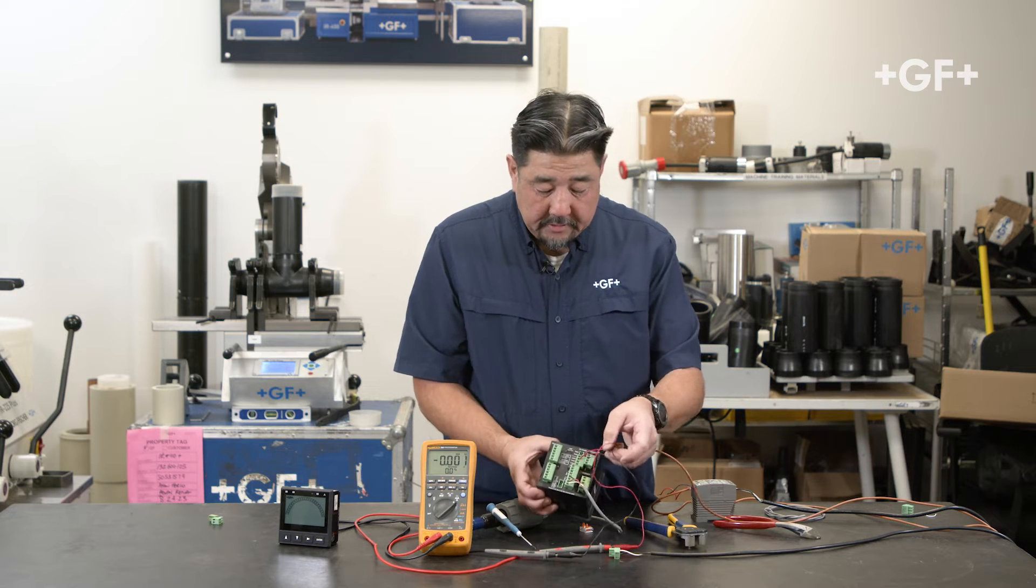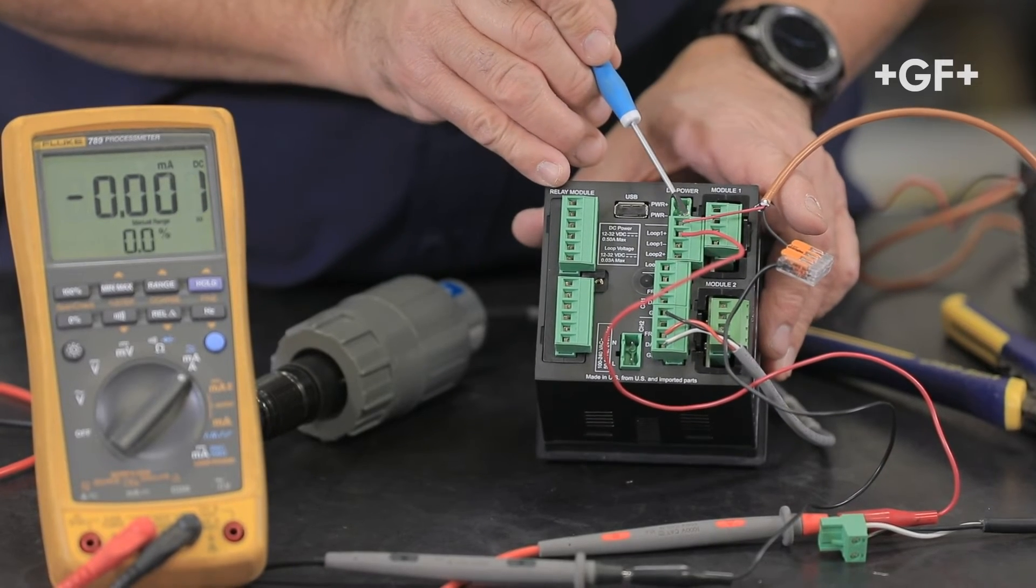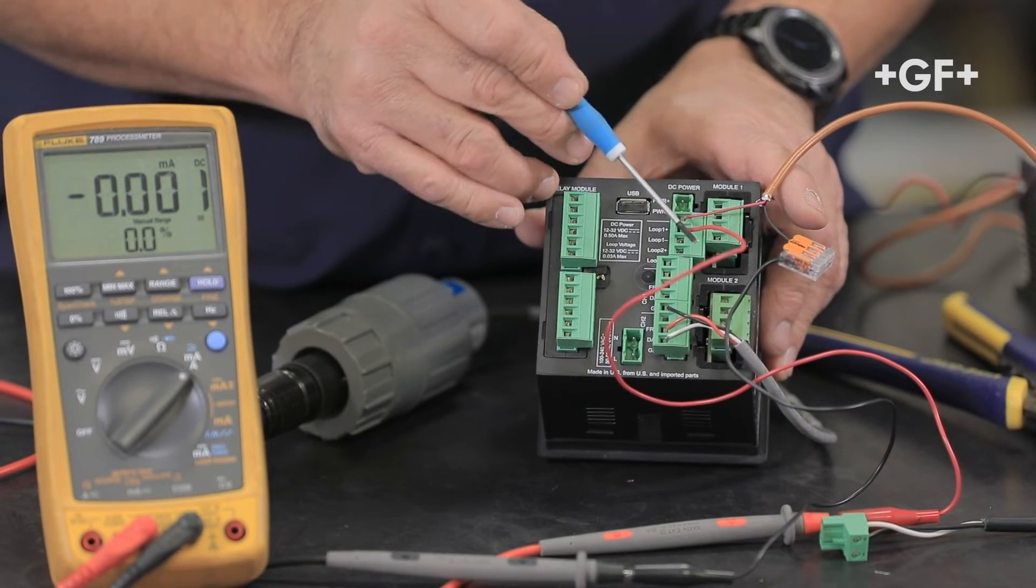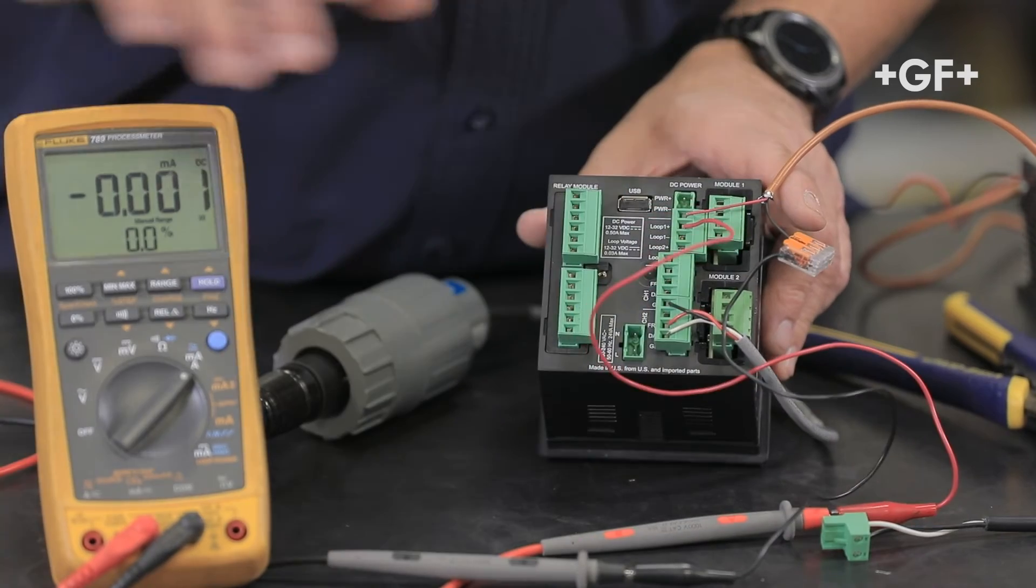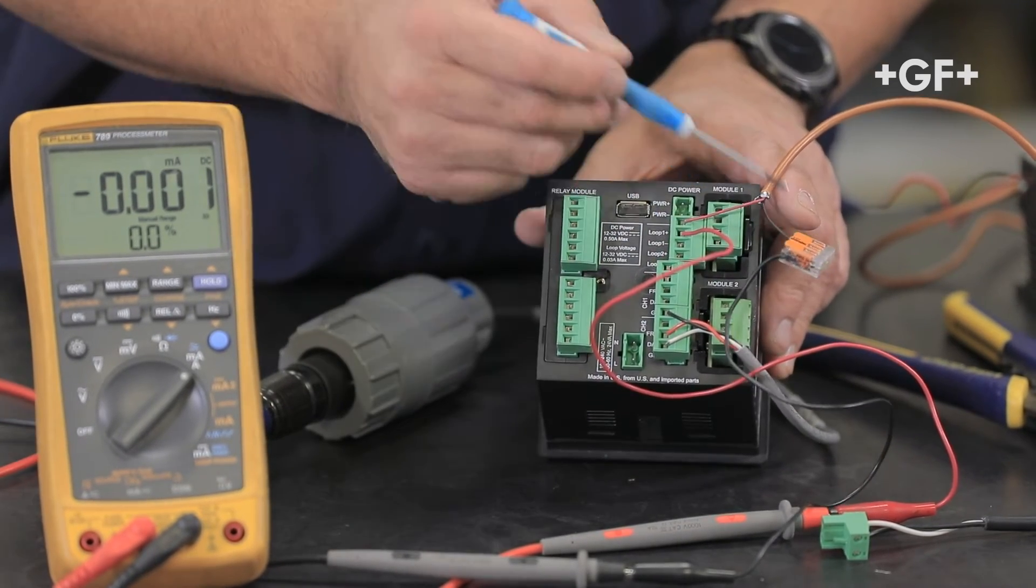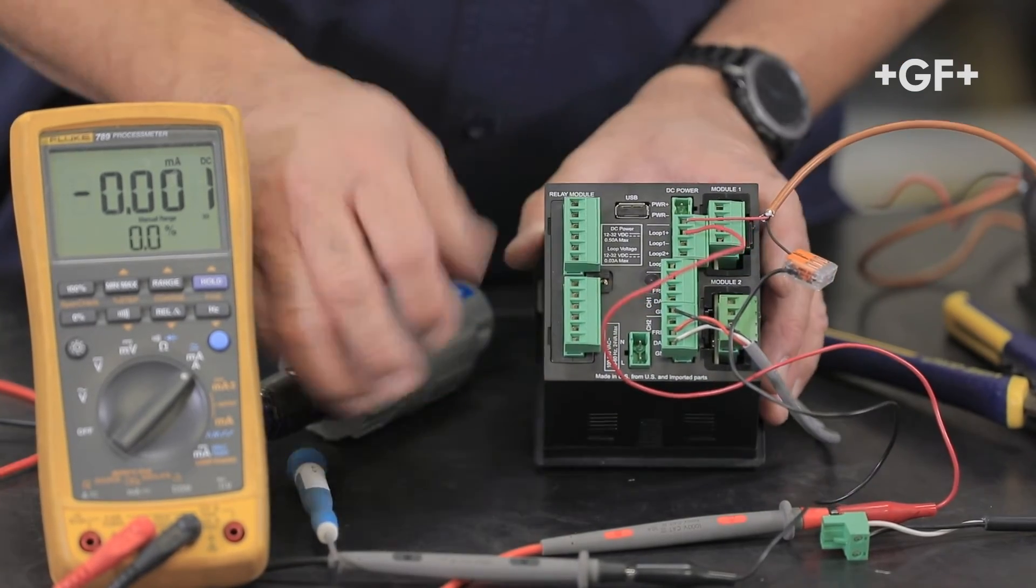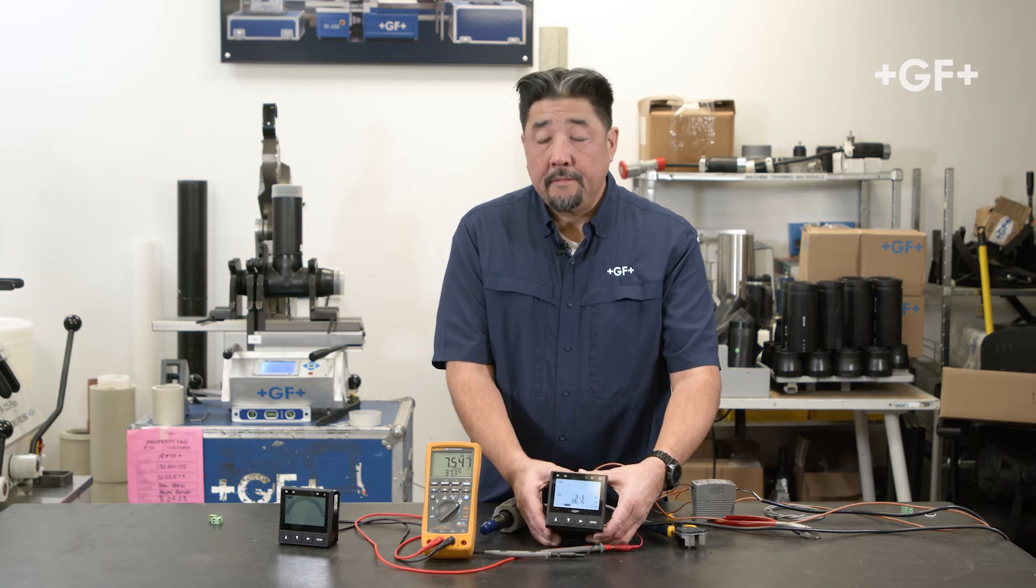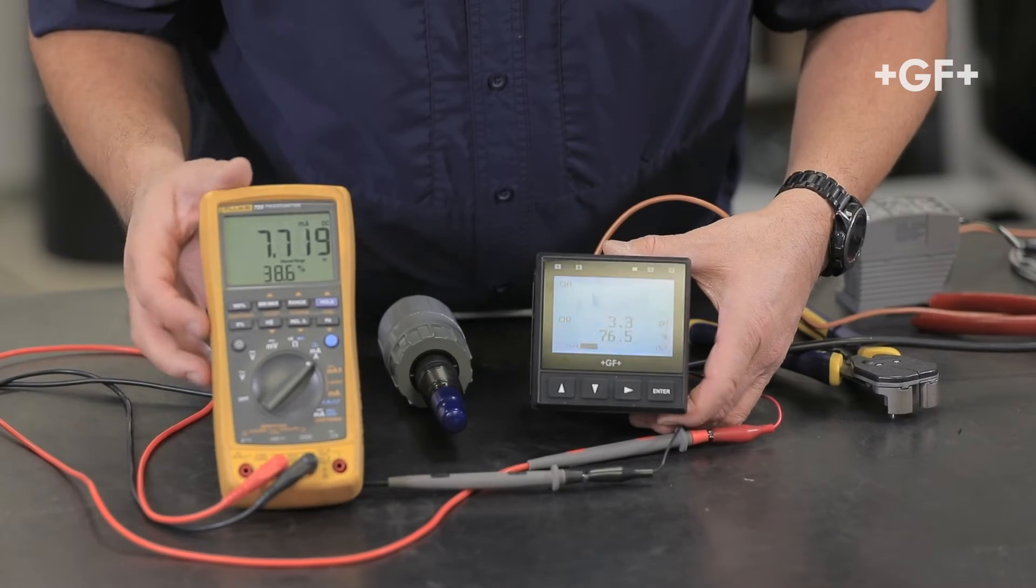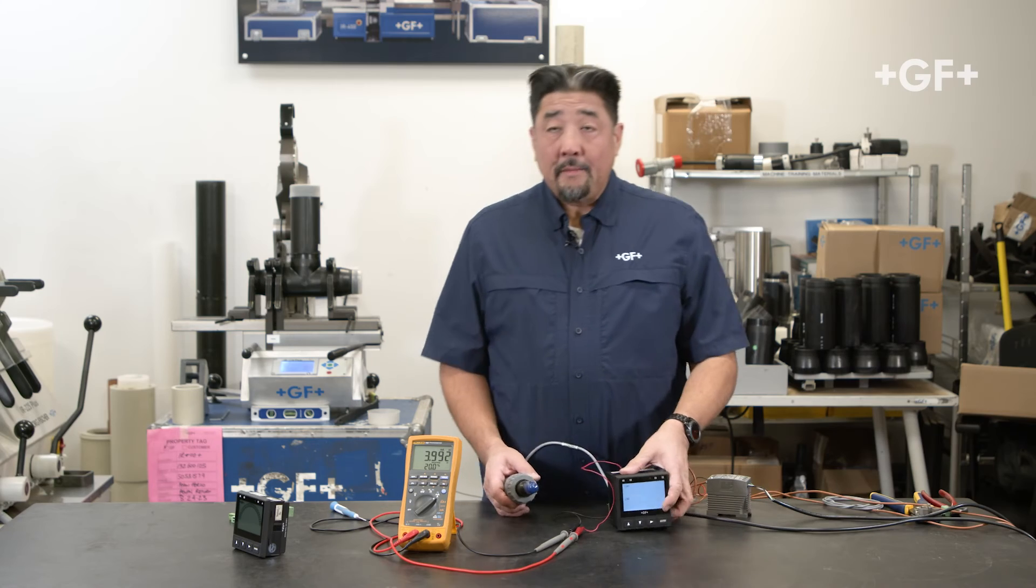So let's go ahead and give that a test. It'll look like this: plus 24 volts in, my signal wire going to the 4 to 20 milliamp device, and my ground to my ground. Let's go ahead and power this up, and here we have 3 pH and a corresponding milliamp value on my meter. So I have wired in a pH sensor.